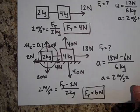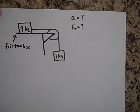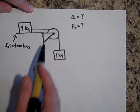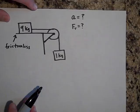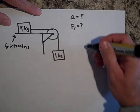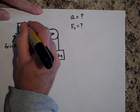Moving right along — we have a frictionless surface with a 9-kilogram block on the table and a 1-kilogram block hanging. I want to know the acceleration of the system and the tension in the wire. Go ahead and pause. We're back. Let's find the acceleration. We have 90 newtons down on the 9 kg block, but the table pushes up with 90 newtons.